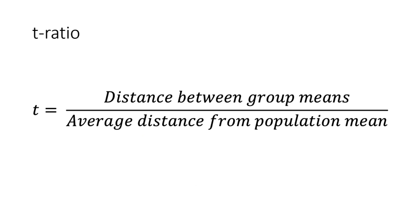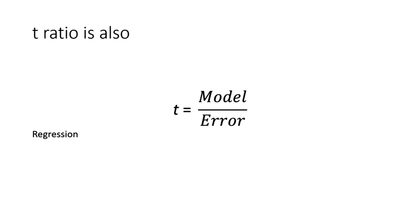One way to conceptualize that equation is that the t-ratio consists of the distance between group means divided by the average distance of the group means from the estimated population mean. That is the standard error. You can also think of the t-ratio as a regression, as previously mentioned, where t is the model divided by the error in the model.